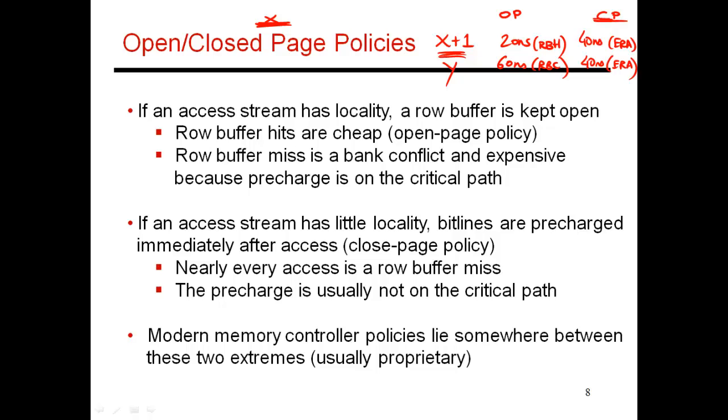So a closed page policy is going to worsen behavior for an access pattern that has locality, because you go from 20 to 40. But it improves delay for an access pattern that is devoid of locality. So if you were going to access y anyway, you're better off pre-charging the bit lines early than waiting until you see this new access to y. So those are two extreme policies for managing the row buffer. But in one case, you service a request and then just leave the row buffer open. The other extreme is to close the row buffer after every single access. And based on how much locality you observe, one or the other will do better. So most commercial memory controller policies try to do something that is somewhere in between these two extremes. And those algorithms are usually not publicly known.